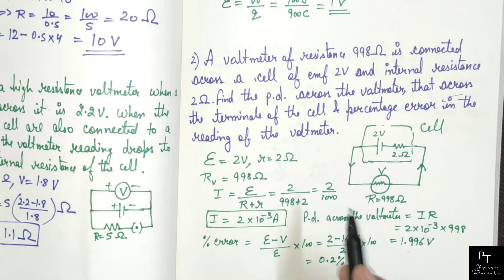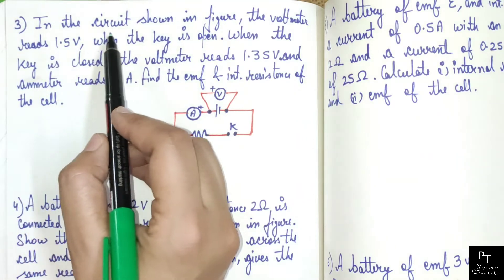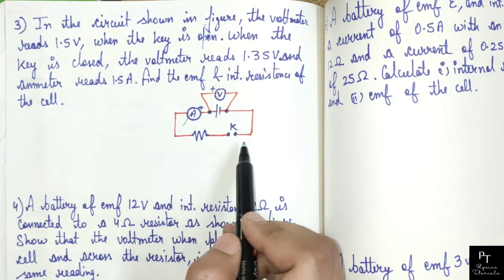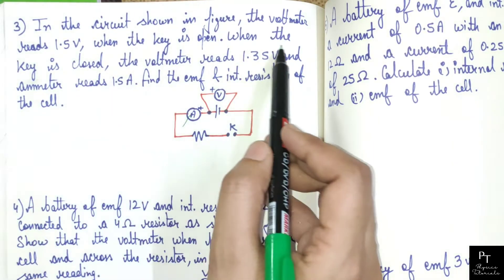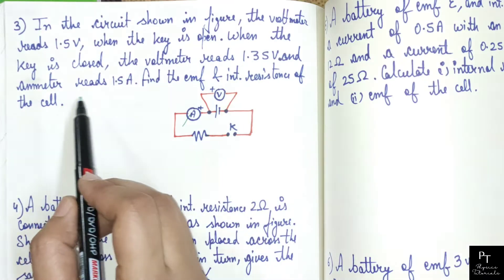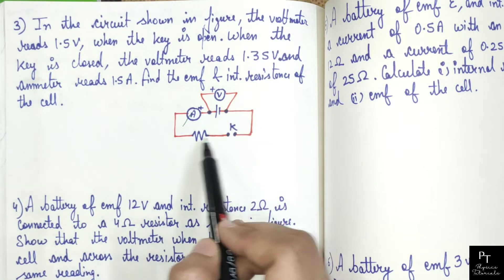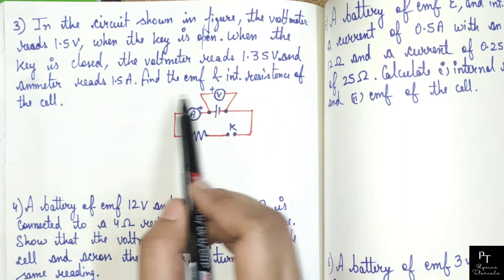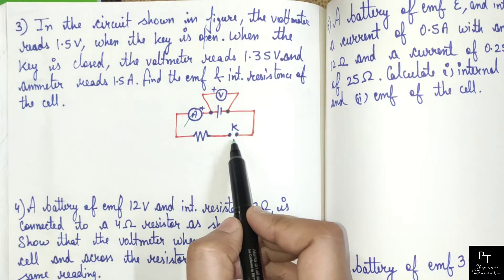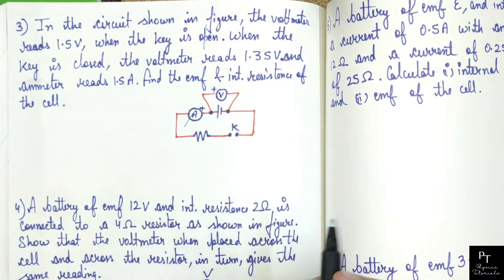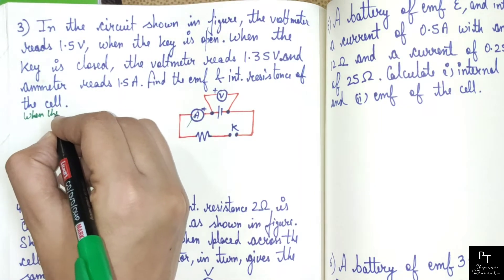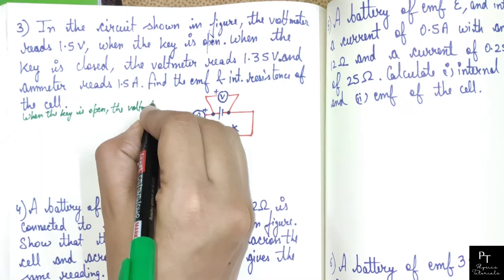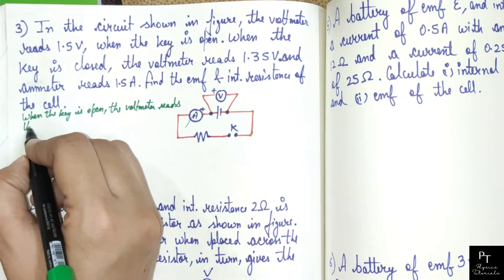Now the third problem: in the circuit shown in the figure, the voltmeter reads 1.5 volt when the key is open — meaning when no current flows through the circuit, the reading is 1.5 volts. When the key is closed, the voltmeter reads 1.35 volt and the ammeter reads 1.5 amperes. We have to find the EMF and internal resistance of the cell. When the key is open, the voltmeter reads the EMF of the cell.